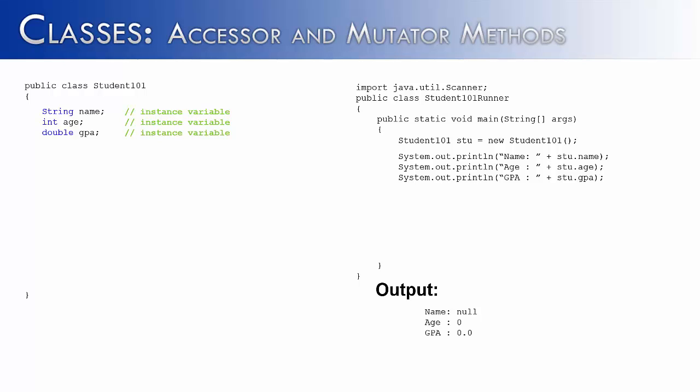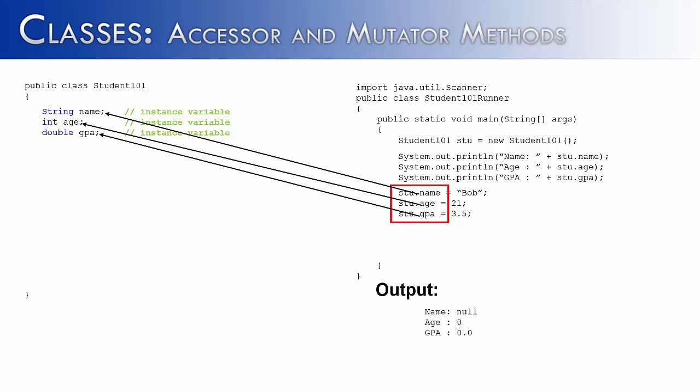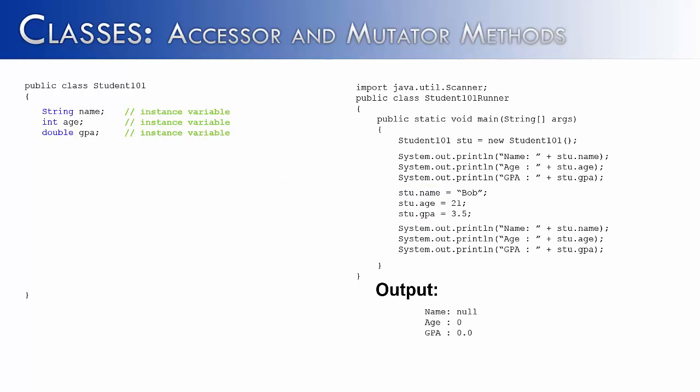Not only can I access them to read them, but I can also access them to change them. I'm saying stu.name, stu.age, stu.gpa and setting them to Bob, 21, and 3.5. Does this work? Absolutely it does. It changes those values to Bob, 21, and 3.5. Let's guarantee this works by printing out the values again using the same code. Instead of printing null, zero, and 0.0, I get Bob, 21, and 3.5.